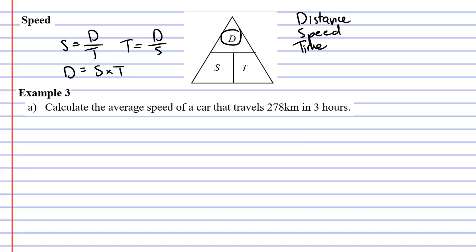We'll start by using the formula to work it out. It says calculate the average speed of a car that travels 278 kilometers, this is D for distance, in three hours, T for time. So we want to find the speed, which is found by using distance over time, or in this case, 278 over 3.